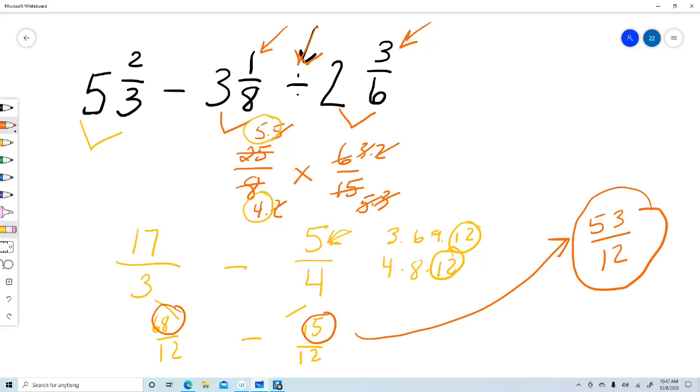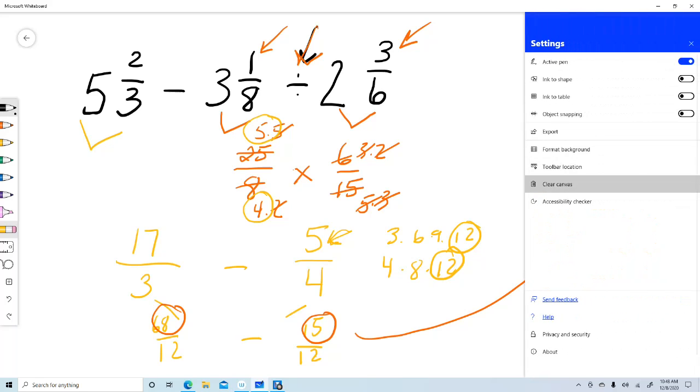All right. So there's some practice turning mixed numbers into improper fractions and dividing fractions. And don't forget your order of operations. Multiplication division first, left to right. Followed by addition and subtraction left to right. And that's it for lesson 46. Okay. Signing off.